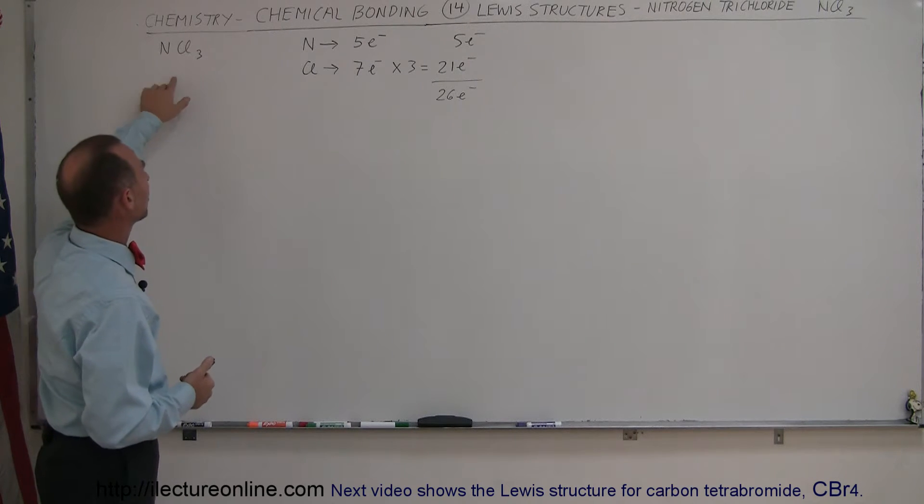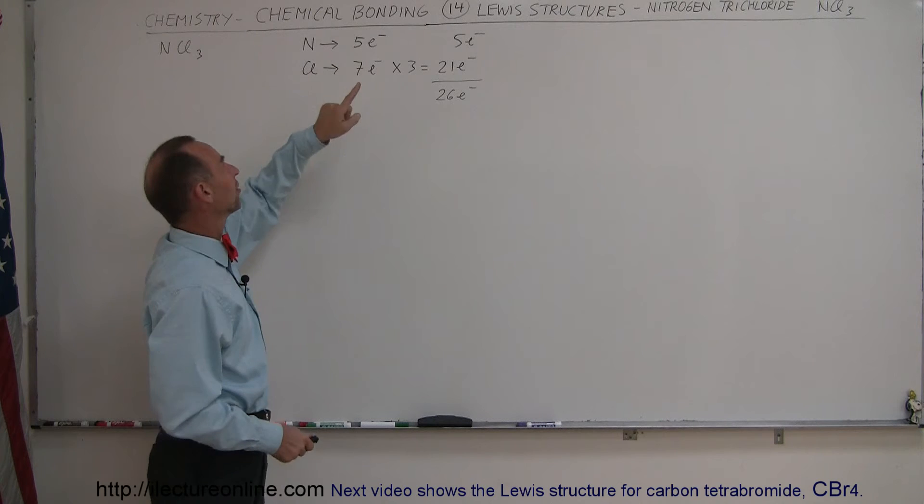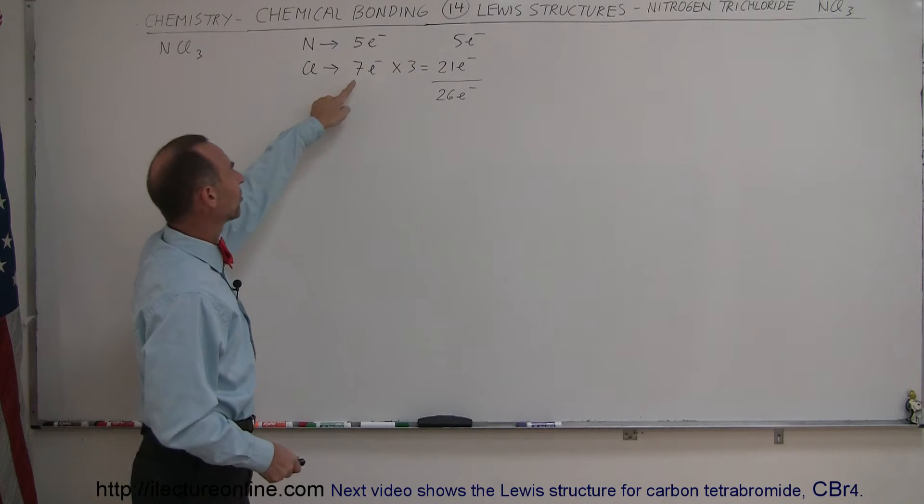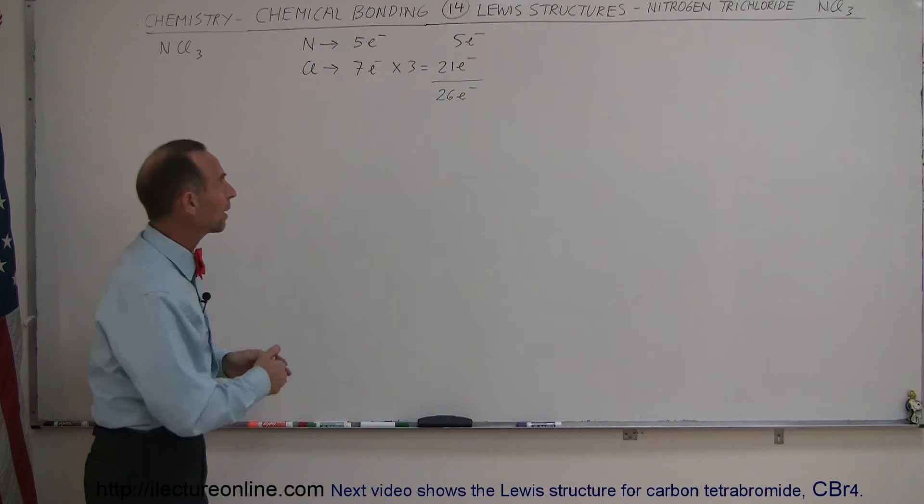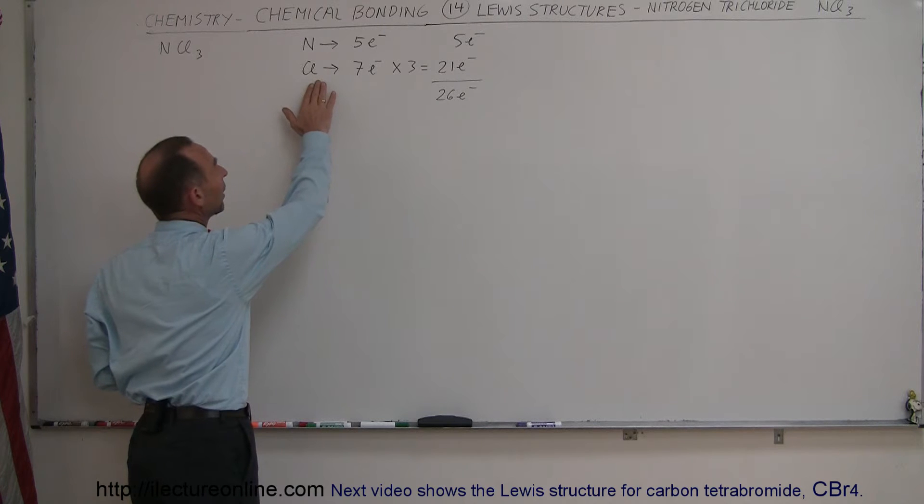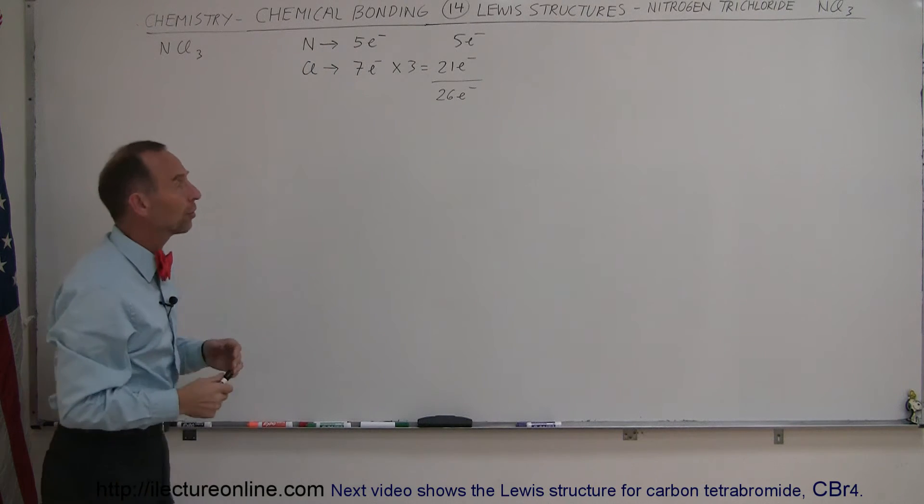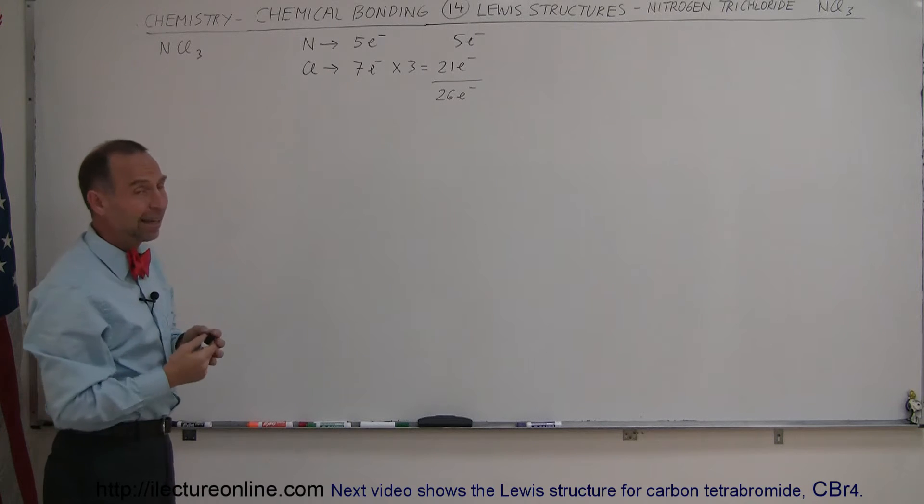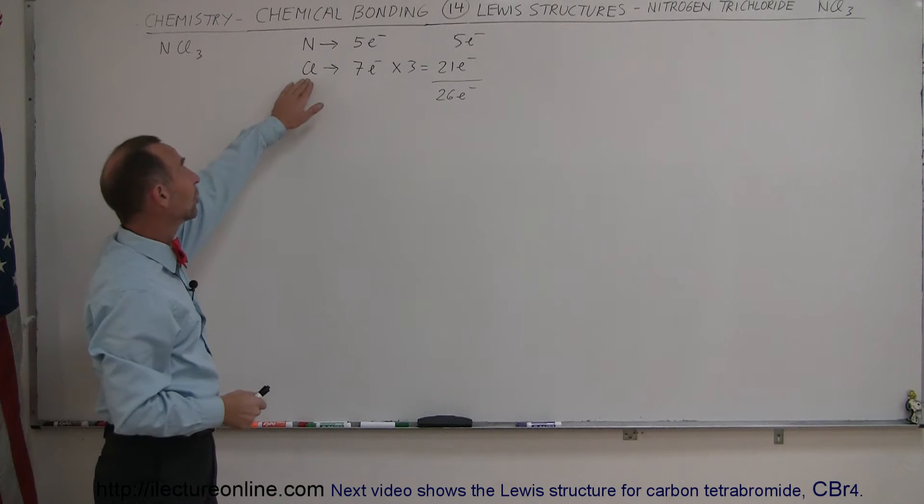So how do we start? Well, first of all, we realize that nitrogen has five valence electrons and chlorine has seven valence electrons. So you expect the chlorine to want one single bond. Nitrogen may need to make three bonds to come up with eight valence electrons. And that comes in pretty handy because there's three chlorines.